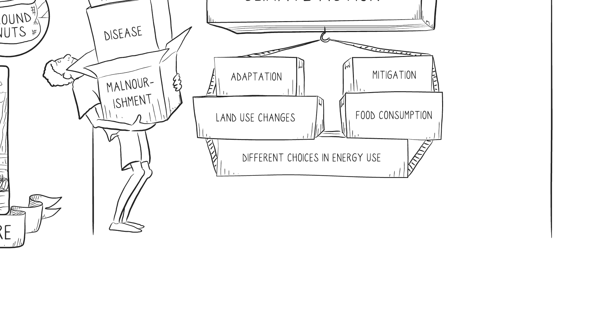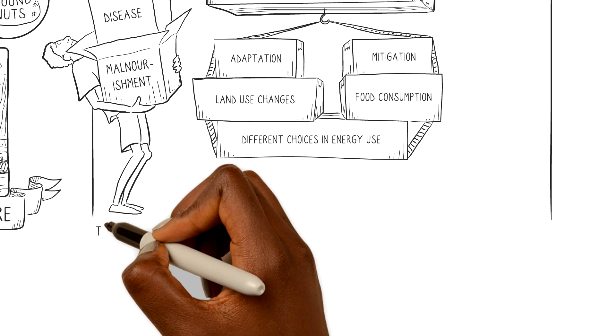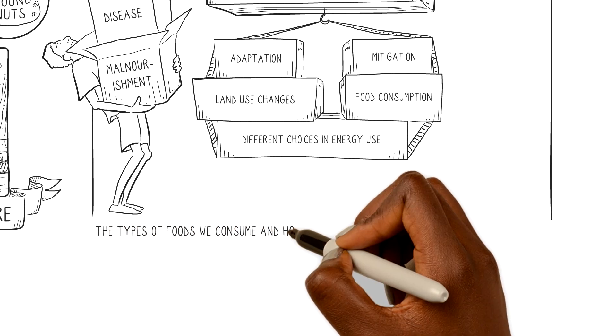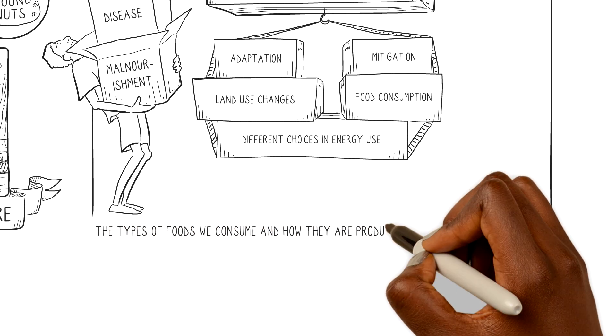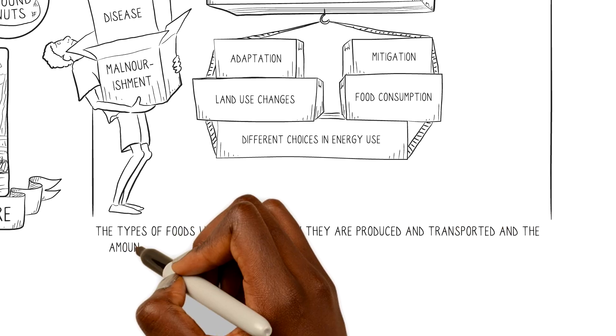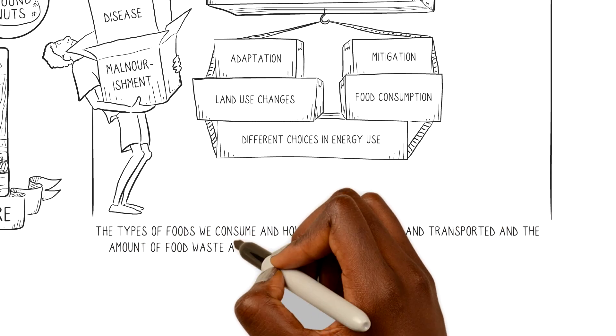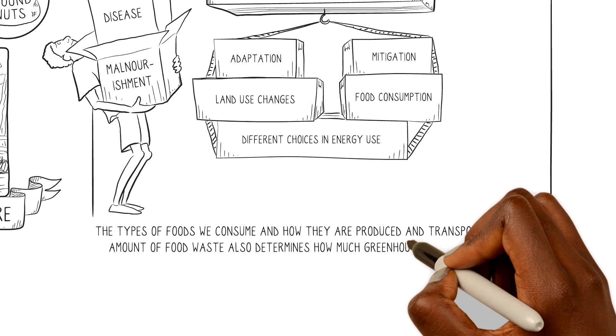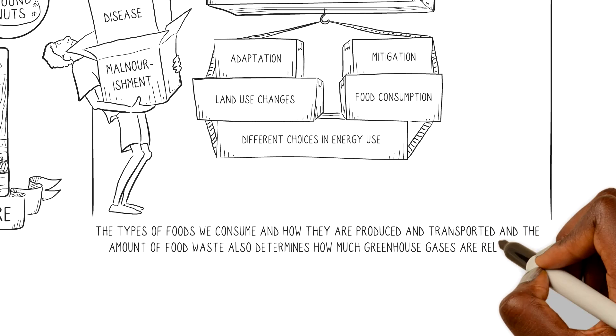Because the type of foods we consume, and how they are produced and transported, and the amount of food waste also determines how much greenhouse gases are released.